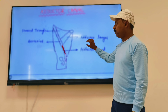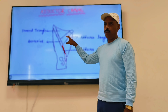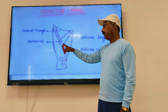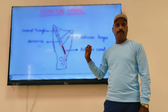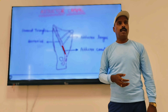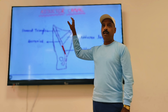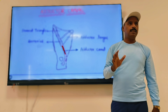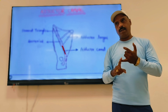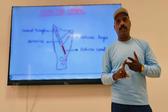The adductor canal is situated after the femoral triangle area. This adductor canal is also called the Sub Sartorial Canal. It is also called Hunter's Canal. So you have to remember the adductor canal has three names: Adductor Canal, Hunter's Canal, and Sub Sartorial Canal.